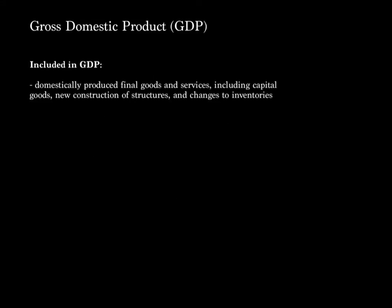When calculating GDP, we include certain things and we don't include certain things. Included in GDP are domestically produced final goods and services, including capital goods, new construction of structures, and changes to inventories.